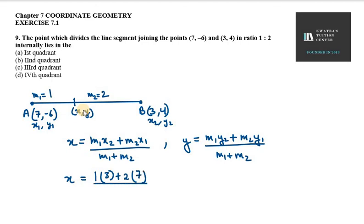Using the section formula, m1 plus m2 equals 1 plus 2. So we have 3 plus 14 over 3, which equals 17 over 3. Now for the y value.